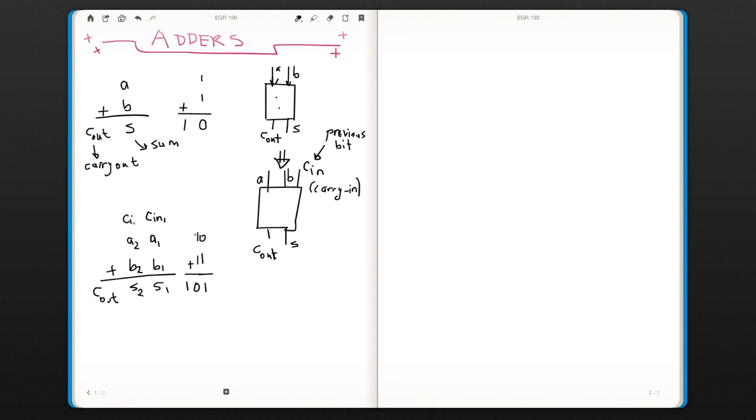And this would be our C in two. So this would come from previous bit point. And this would be coming from A1, B1.